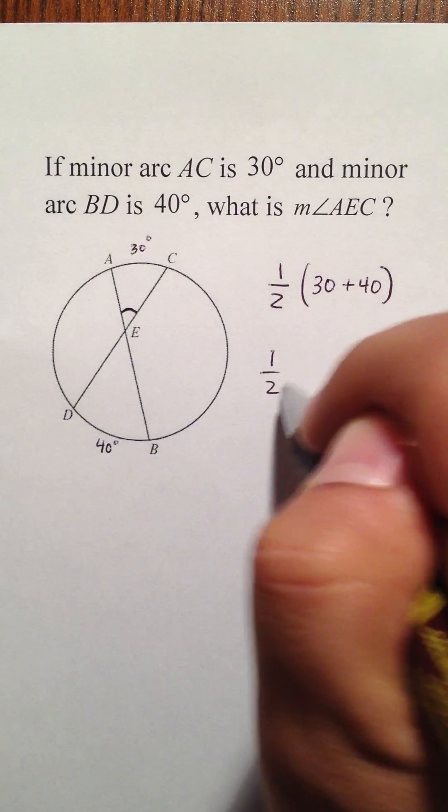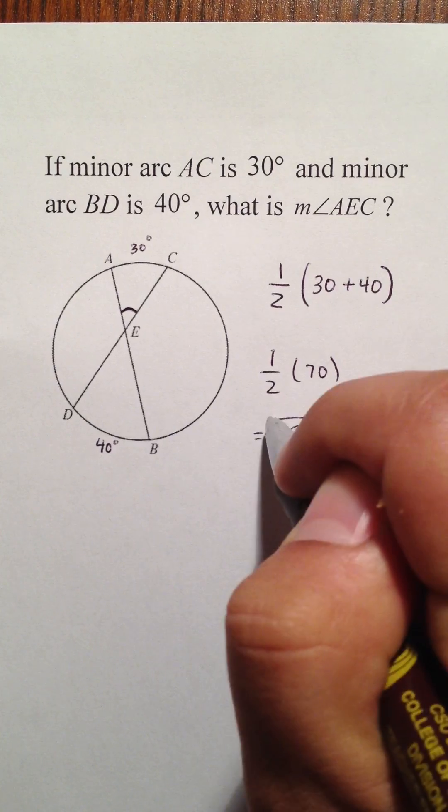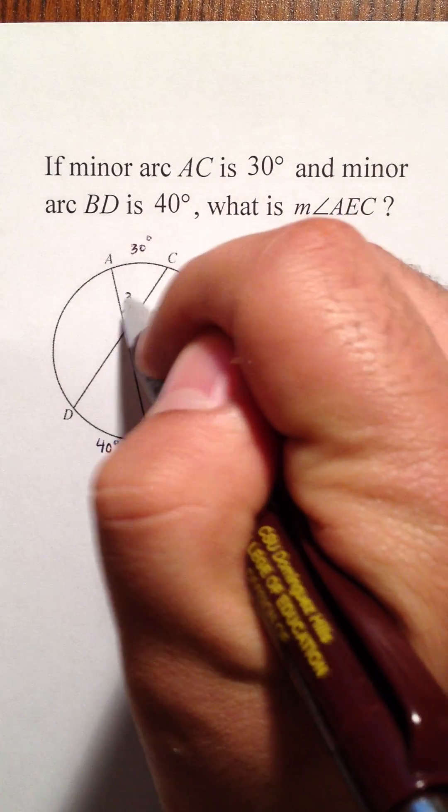Therefore, one half of 70 is 35. So I can tell you right now that this is 35 degrees.